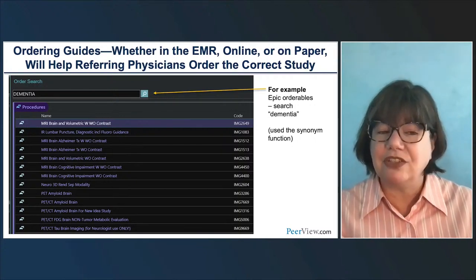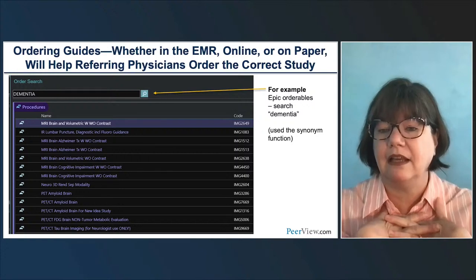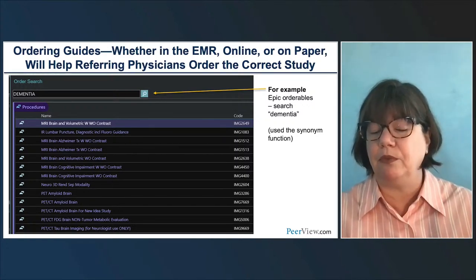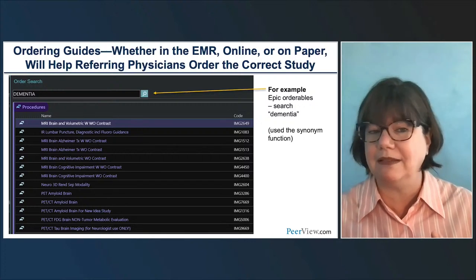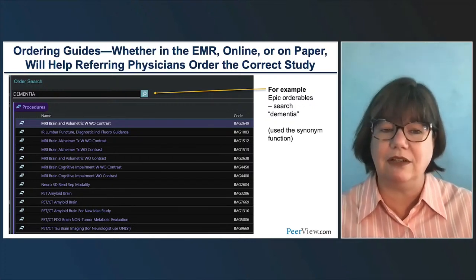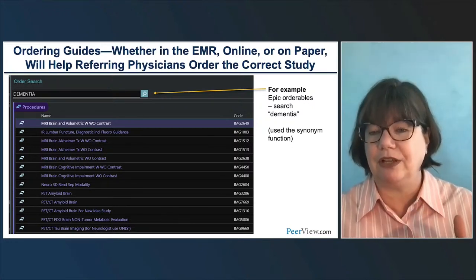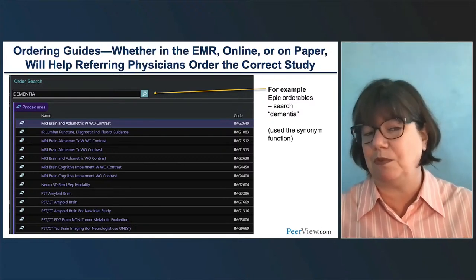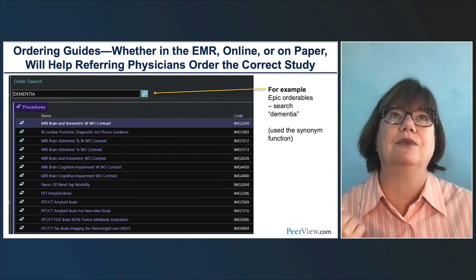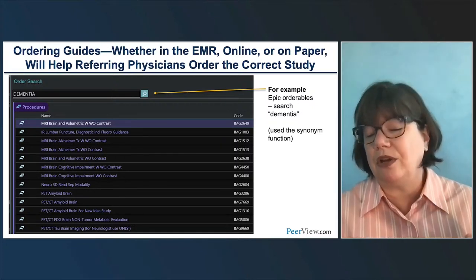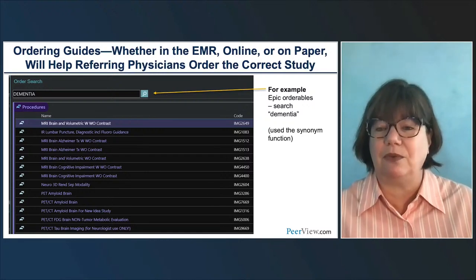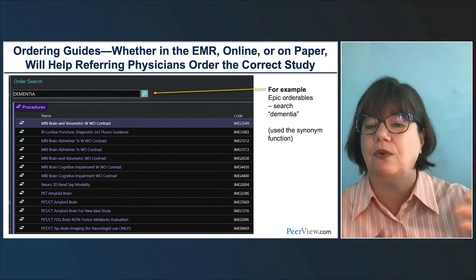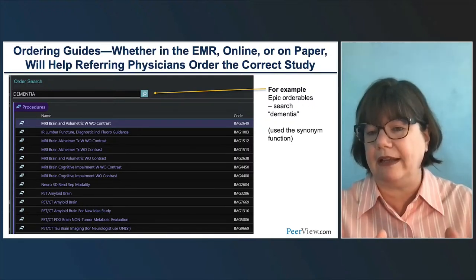Another thing we can do is create ordering guides. We built one within EPIC using a synonym function—you type 'dementia' and get all the orders specific for this group: brain MRIs for monitoring and baseline, lumbar puncture, amyloid or tau PET, FDG PET. It makes it easy when someone calls the reading room and asks how to order the right MRI. You can also have webpages with ordering guides or paper guides. Think about making an ordering guide specific to your dementia patients to ensure correct coding before they come in.